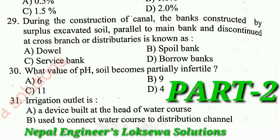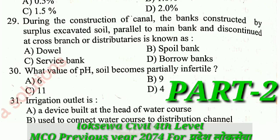The dowel is a structure provided on the bank of a canal for safety of automobiles during inspection. The spoil bank is the road provided on either one side or both sides of the canal bank for inspection purposes.